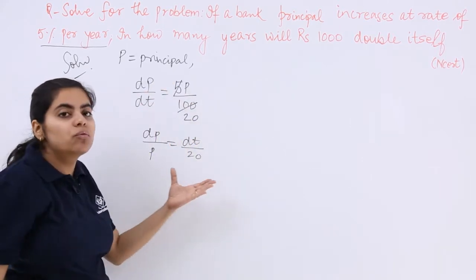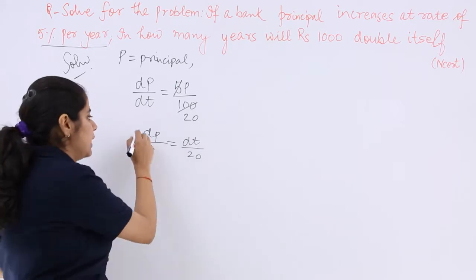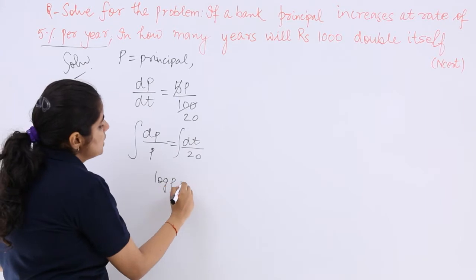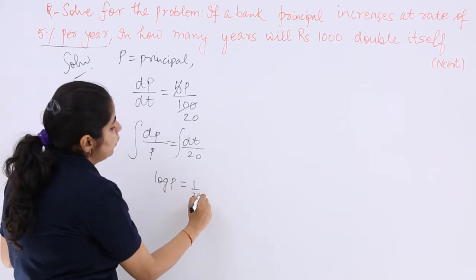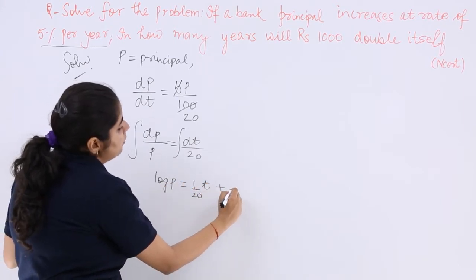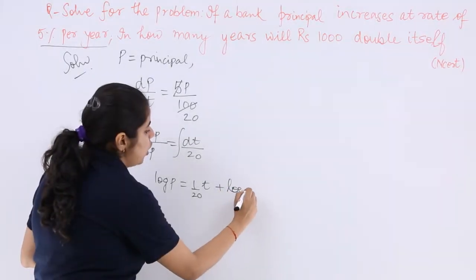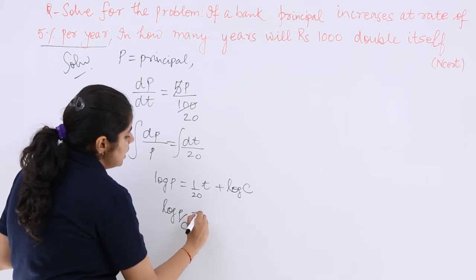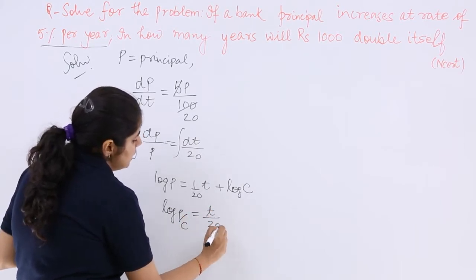As you can see, we are moving the similar things to one side. Integration. So what happens is, this is log P equals 1/20 multiplied by T plus, so let me make it as log C. Now log P minus log C is log(P/C) and T/20 is here.